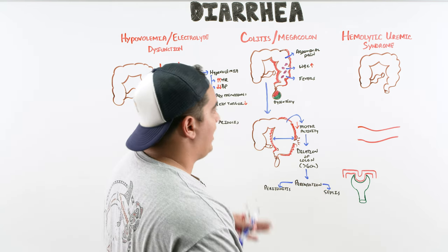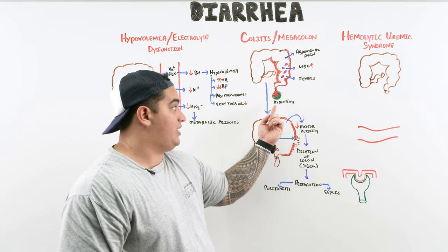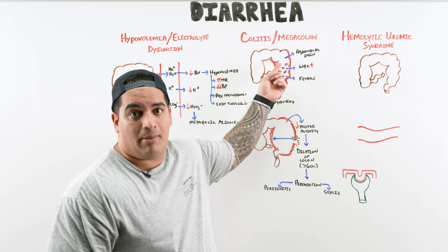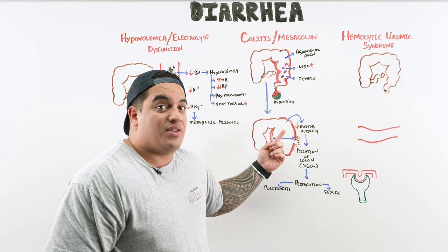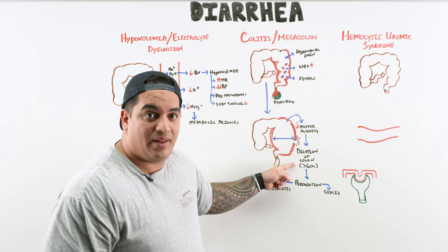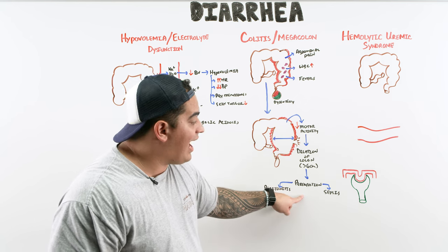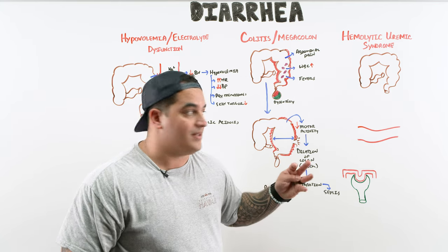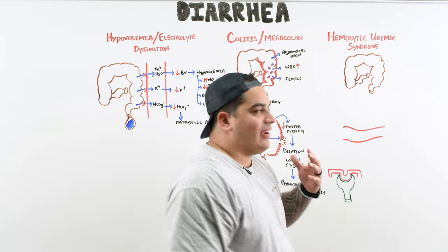So: a patient with fevers, abdominal pain, elevated WBCs, mucoid and bloody diarrhea — think colitis, identifiable on imaging. If their pain worsens and imaging shows dilation greater than six centimeters, they have toxic megacolon. High risk for perforation, pneumoperitoneum, peritonitis, and sepsis.